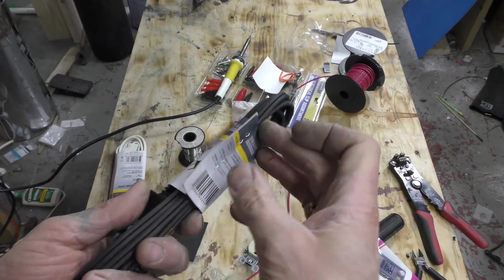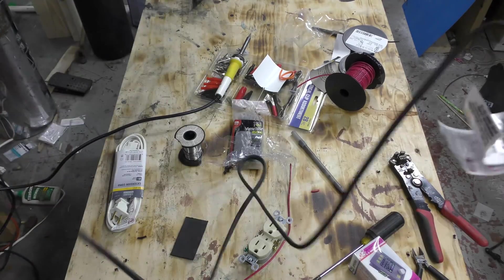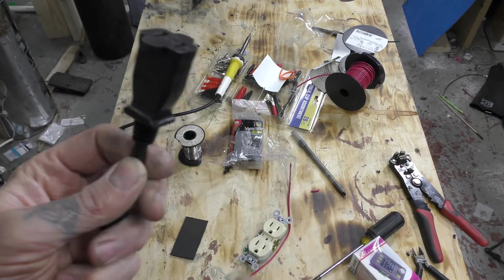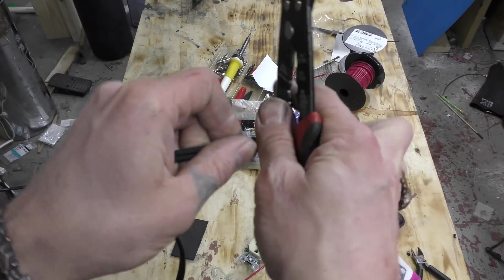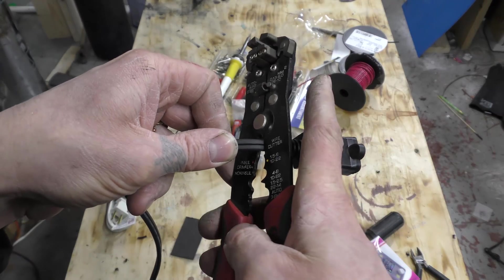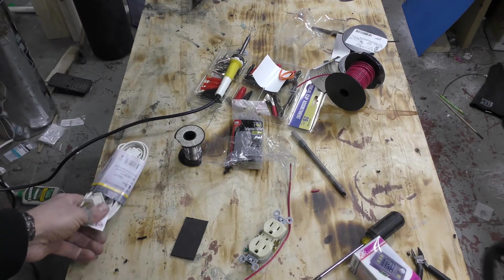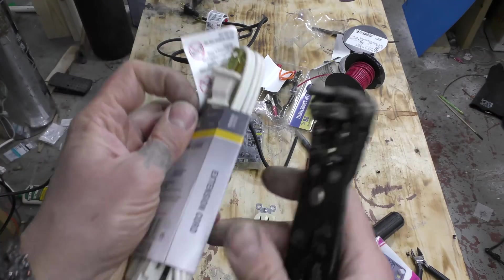So extension cords, again $1.37, come in a bunch of different colors. I do not need this end. I got six foot ones.